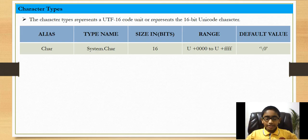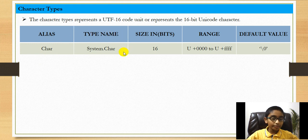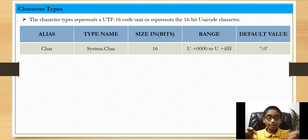Now we're going to talk about character types. The char type represents a UTF-16 code unit, or a 16-bit Unicode character. UTF stands for Unicode Transformation Format. The alias name is char and the .NET Framework type is System.Char. Its size is 16 bits, its range covers Unicode characters, and its default value is escape character 0. When declaring a character, it should always be in single quotation marks — double quotation marks would make it a string and cause an error.